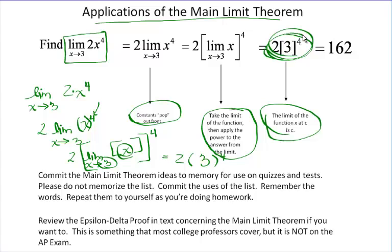I have it all broken down but constants pop out front. The limit can be applied first and then the power and the limit of a function x at C is C. This value is just as correct as that value. I know I've said you never, never, never, never, never have to simplify. You don't. That is a correct value. If this were a multiple choice question, your answer would not look like that, however. It would look like this.